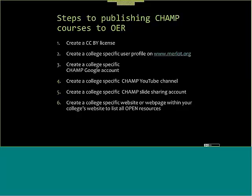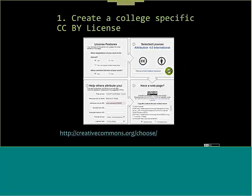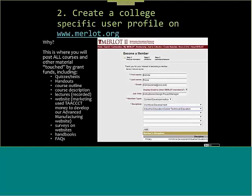Here at the system office we use SlideShare. Create a college-specific website or web page within your college's website to list all the open resources. The sixth step gives you proof to DOL that your material is in open format, providing a list of all your open resources beyond a static spreadsheet or Word document. You'll create the college-specific CC-BY license and a specific user profile. For CHAMP, we are workforce development, industrial education, and career tech education — that's the discipline we're actually under. Handouts, outlines, descriptions, lectures, and surveys all need to be published to open.